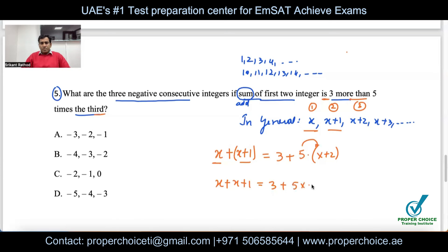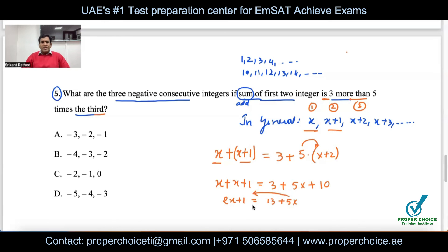Distributing gives 5x + 10 on the right, so 3 + 10 = 13. Simplifying: 2x + 1 = 13 + 5x. Moving terms: 2x − 5x = 13 − 1. When we move a term from one side to the other, the sign changes.